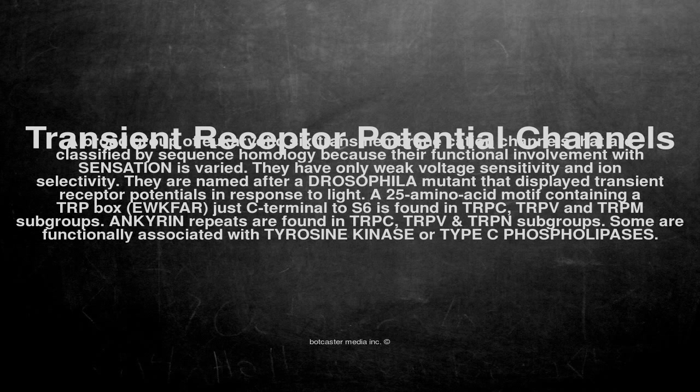They are named after a Drosophila mutant that displayed transient receptor potentials in response to light. A 25-amino acid motif containing a TRP box, EWKFAR, just C-terminal to S6, is found in TRPC, TRPV, and TRPM subgroups.